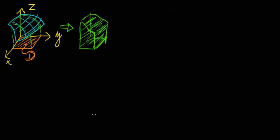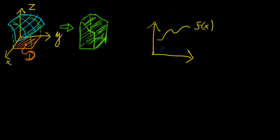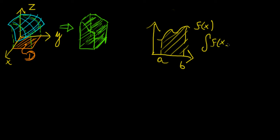Now that we have described what partial integration is, we can begin to define what a double integral is. To draw an analogy with the single integral, if we have some function f of x and define some interval from a to b, the integral from a to b is just the area underneath that curve — essentially a sum of little strip contributions as the number of strips goes to infinity and their width keeps decreasing.